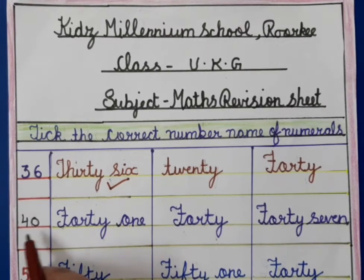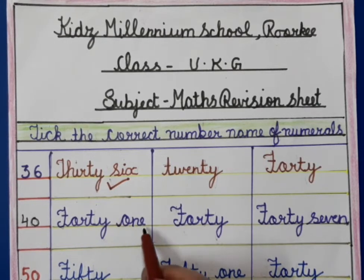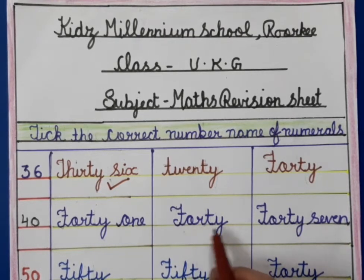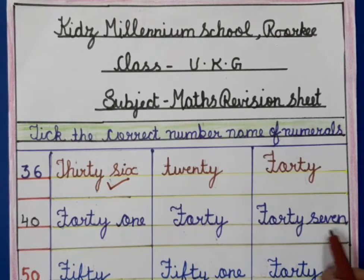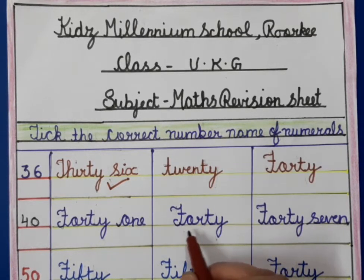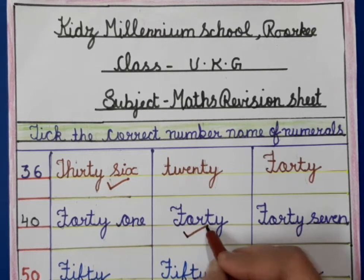Next one is 40. The options are: FORTY-ONE (41), FORTY (40), and FORTY-SEVEN (47). So, FORTY is correct and we will tick it like this.